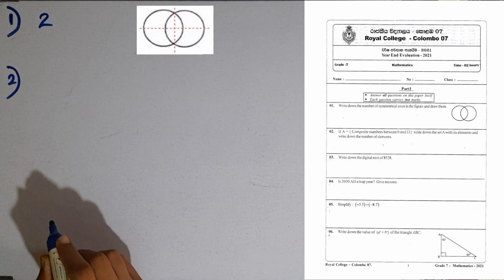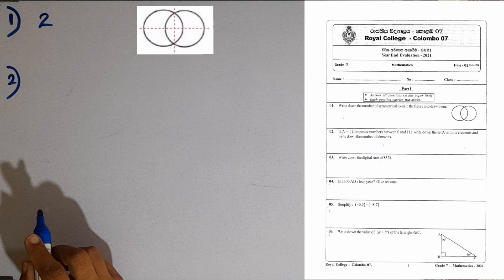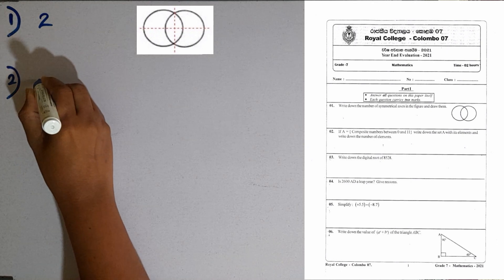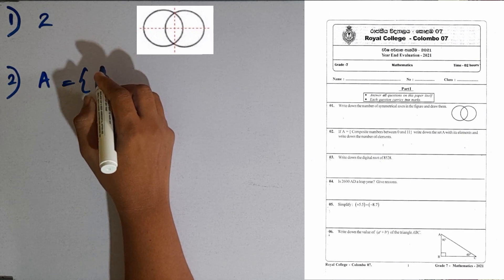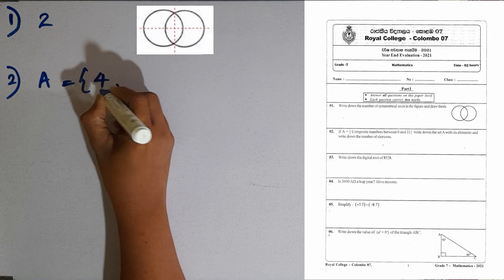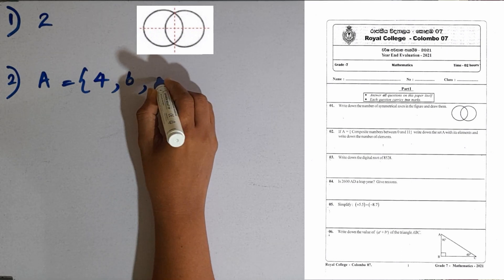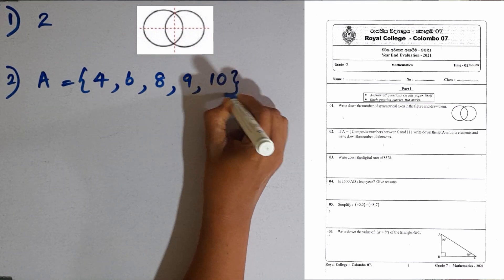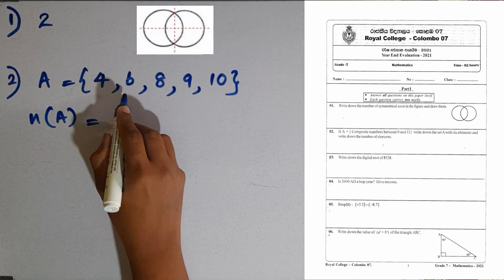Question number 2. If A equals composite numbers between 0 and 11, write down the set of A with its elements and write down the number of elements. What are the elements in set A? Composite numbers between 0 and 11. 1 is not a composite. Then 2, 3 are prime. Then 4 is the next composite, first composite. Then 5 is a prime. 6 is a composite. 7 is a prime. 8 is a composite number. 9 composite. 10 composite number. So, these are the elements of set A. N A. How many elements are there in set A? 5.